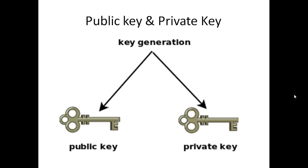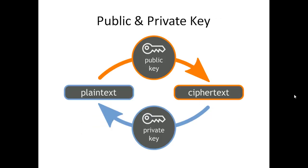The public key is known to everyone, while the private or secret key is known only to the recipient of the message. Text is encrypted using the public key. Look at the picture. Here we are using the public key to encrypt the message, then the private key is used to decrypt it.